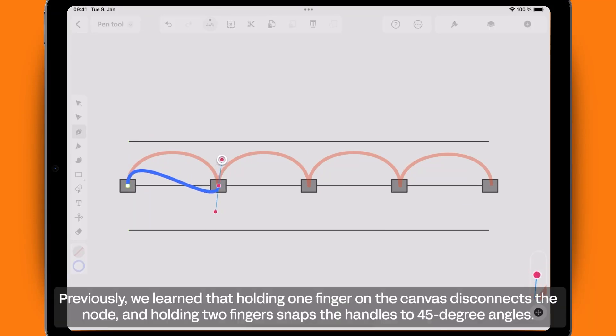Previously, we learned that holding one finger on the canvas disconnects the node, and holding two fingers snaps the handles to 45 degree angles.